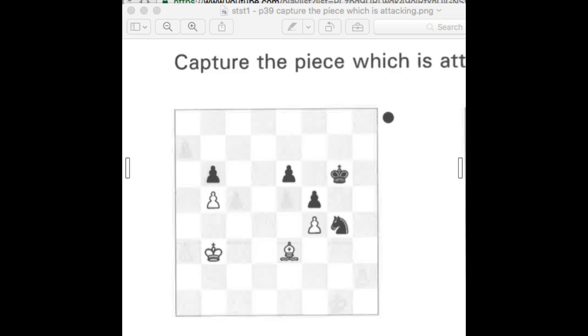Stepping Stones 1, page 39. Capture the piece which is attacking. So it's black that is being attacked and should capture back.